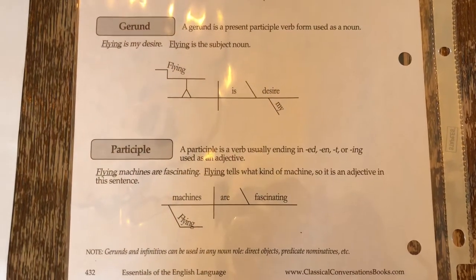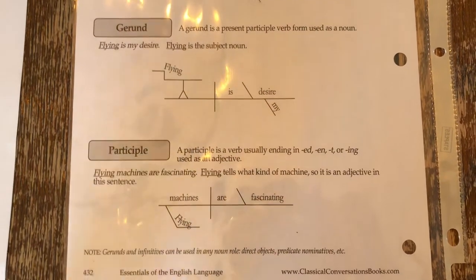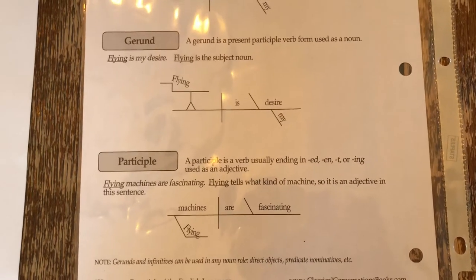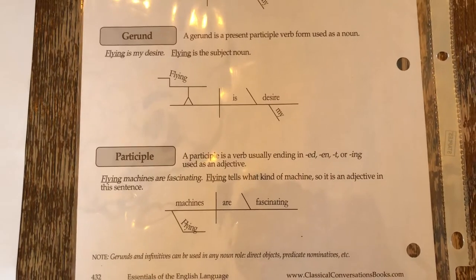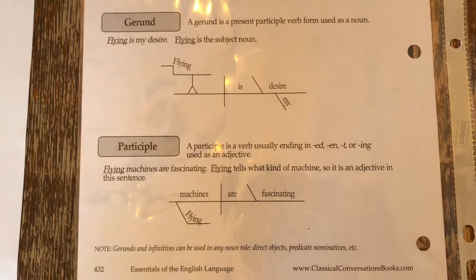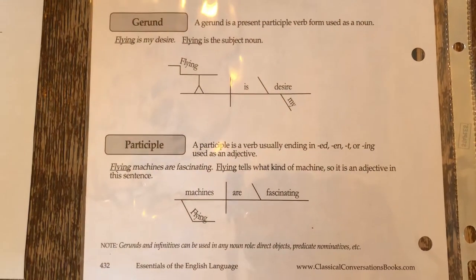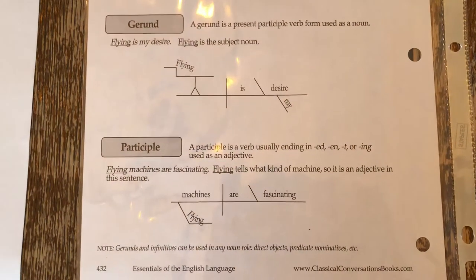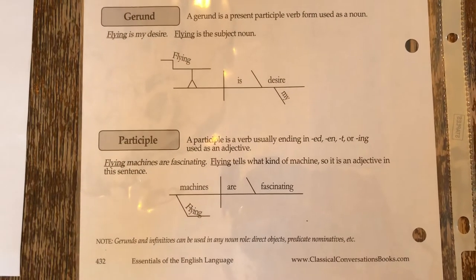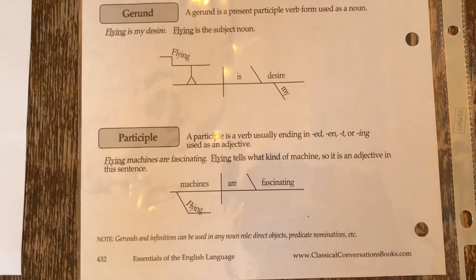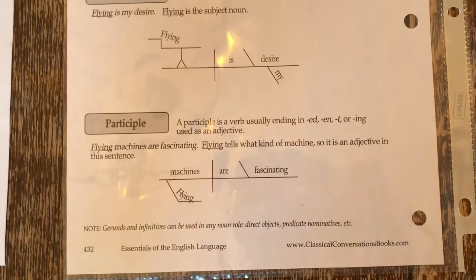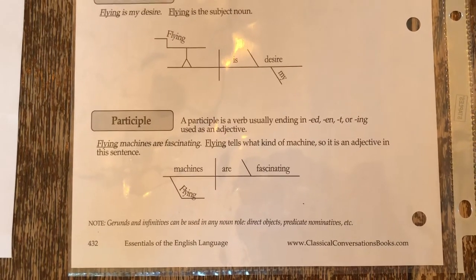So a present participle is what? Kendra, what's a present participle? It's a verb plus I-N-G. E-D would be past participle. I-N-G is a present participle. So a present participle is a verb plus I-N-G used as an adjective or a verb.